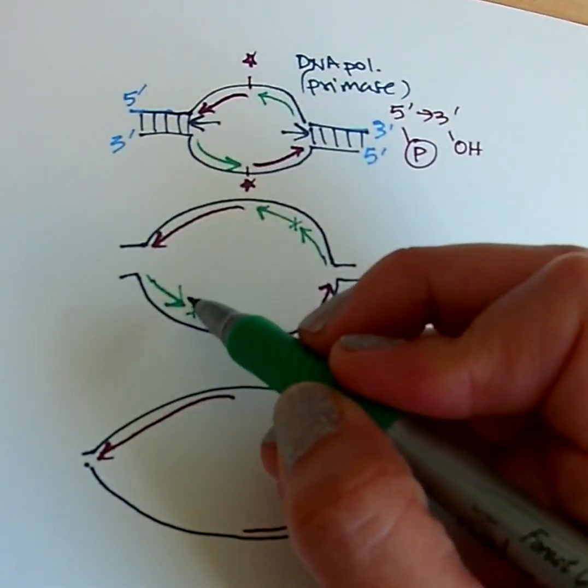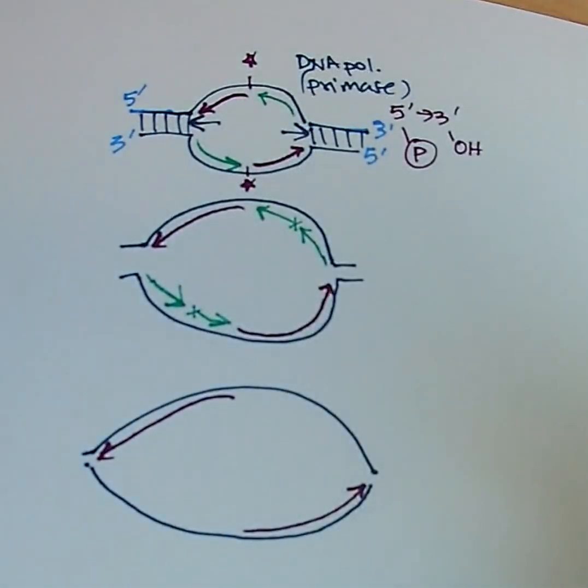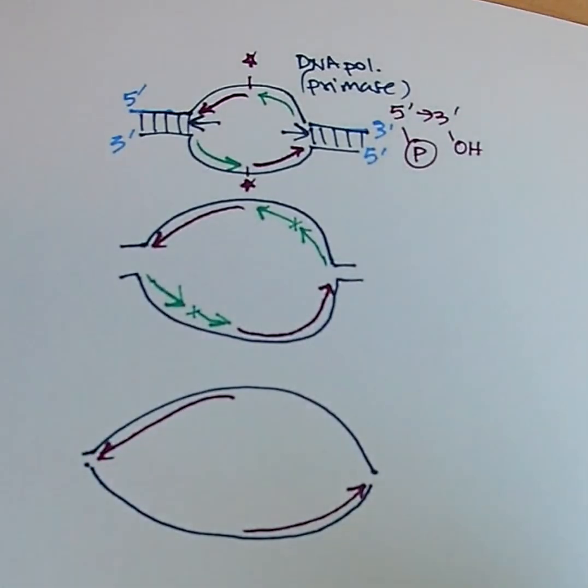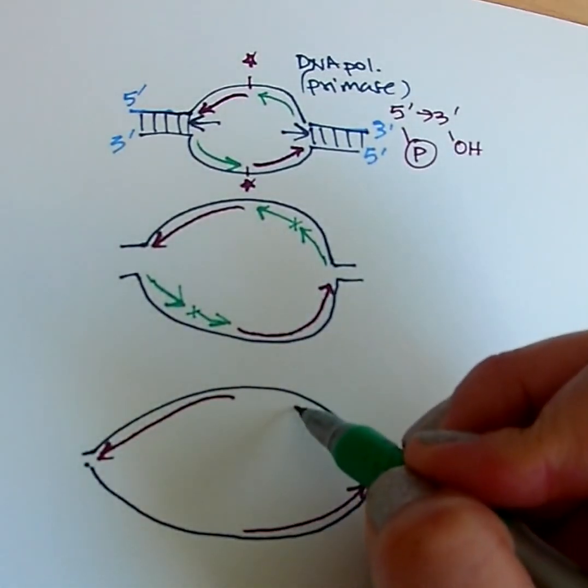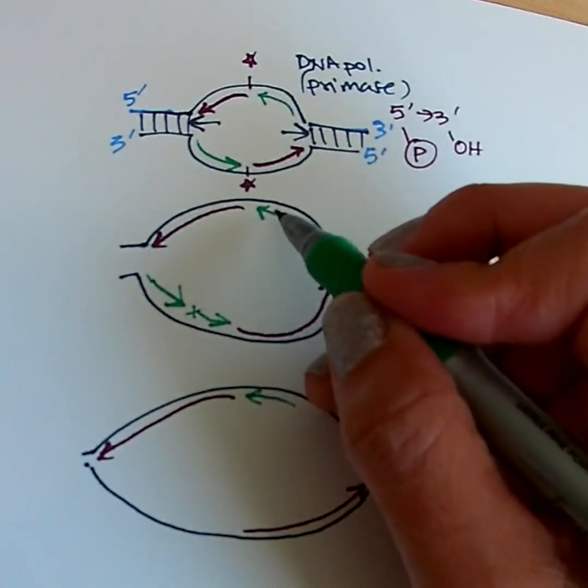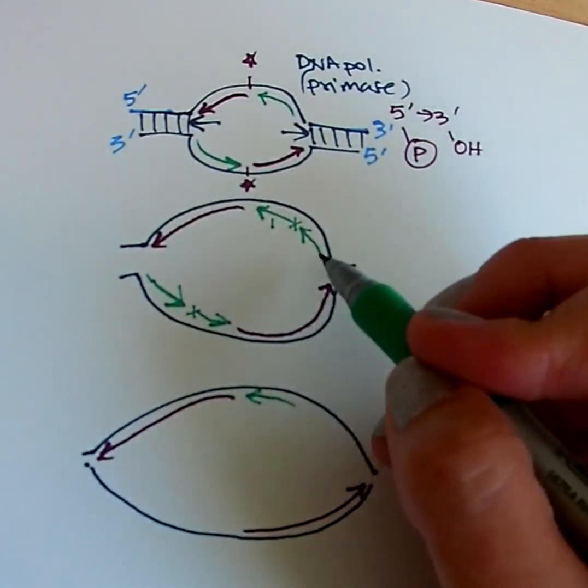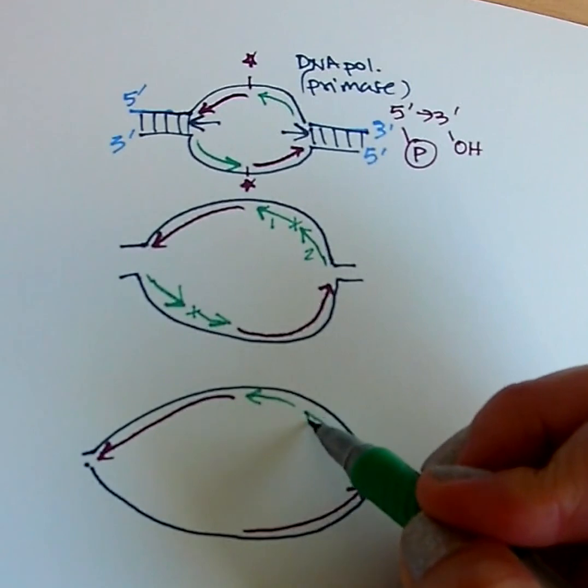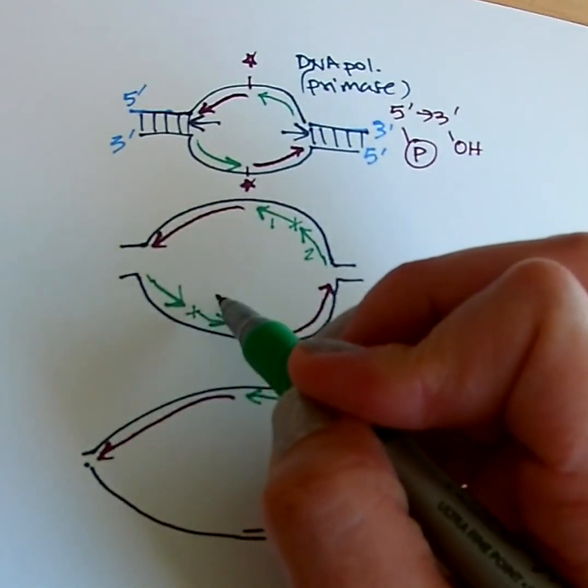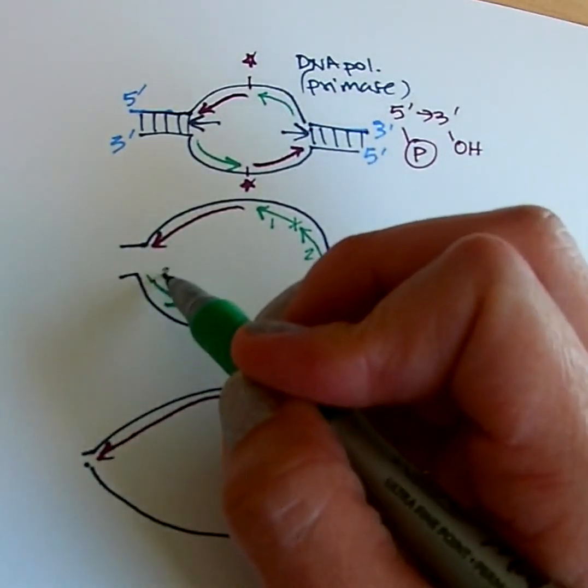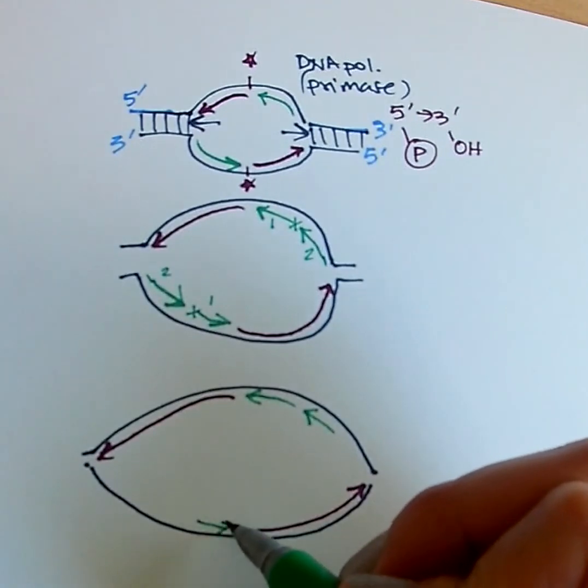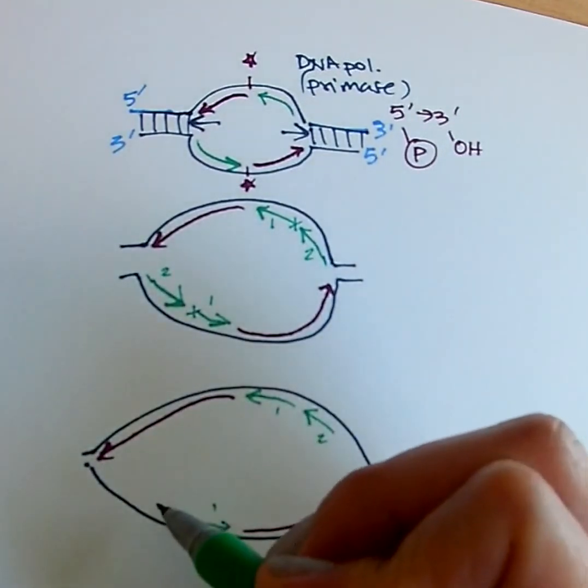Now at the end, DNA ligase can come and seal these nicks, but we're not worried about that just yet. So now we've got this little piece here. That's this piece here, piece number one. Piece number two here. Piece number one again here, and two here. So piece number one and piece number two.